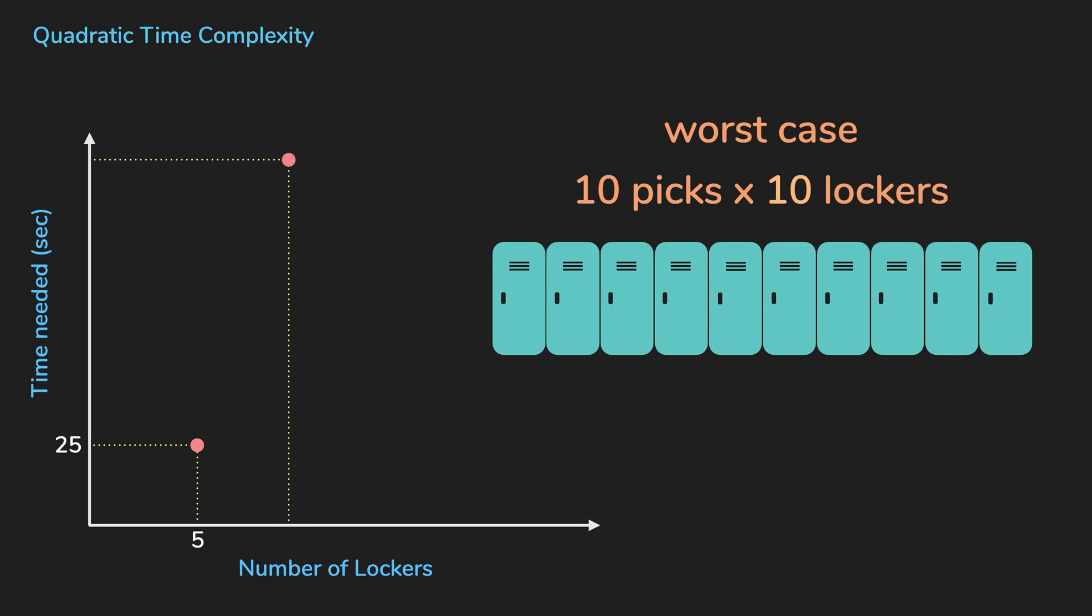When N is 10, you would have to pick the keys 100 times, 10 times for each locker. So the time needed to find the book will increase quadratically to the input.